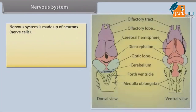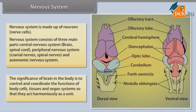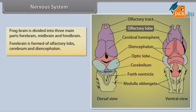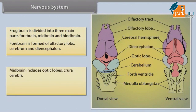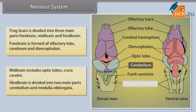Nervous System: The nervous system is made up of neurons. It consists of three main parts: central nervous system (brain and spinal cord), peripheral nervous system (cranial and spinal nerves), and the autonomic nervous system. The brain controls and coordinates the functions of body cells, tissues, and organ systems. The frog brain is divided into three main parts: forebrain, midbrain, and hindbrain. The forebrain is formed of olfactory lobes, cerebrum, and diencephalon. The midbrain includes optic lobes and crura cerebri. The hindbrain is divided into cerebellum and medulla oblongata.